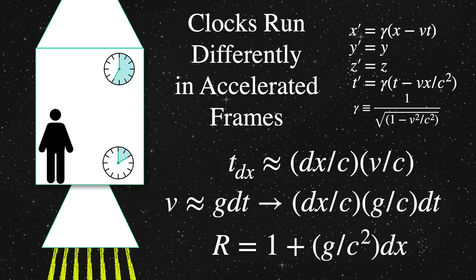So to a first order approximation, t sub dx is about equal to dx over c times v over c. That's what you get by looking closely at the Lorentz transformation we see above, letting t tick be the time a little bit higher up than the lower clock's time t.